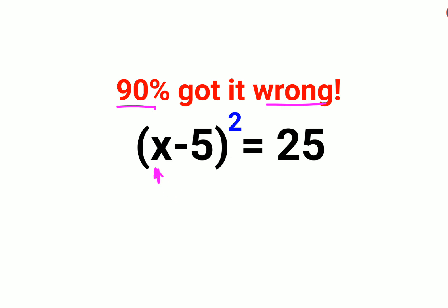Please understand, whenever there is a variable raised to an even power and it is equal to some value, what you need to do is - in this case since it is a square, I am going to take square root on both sides.